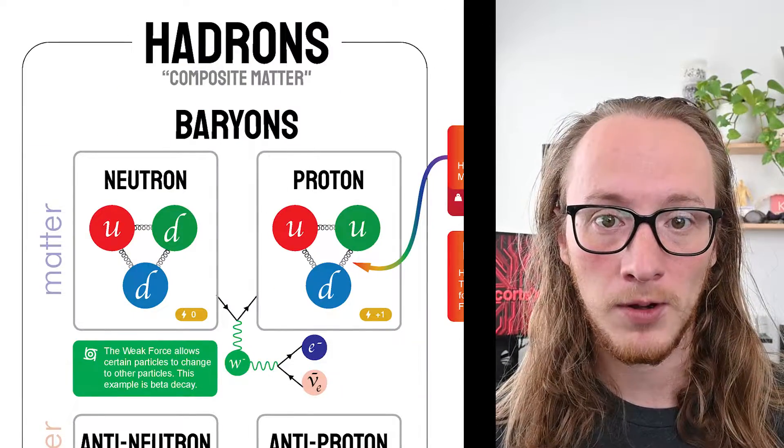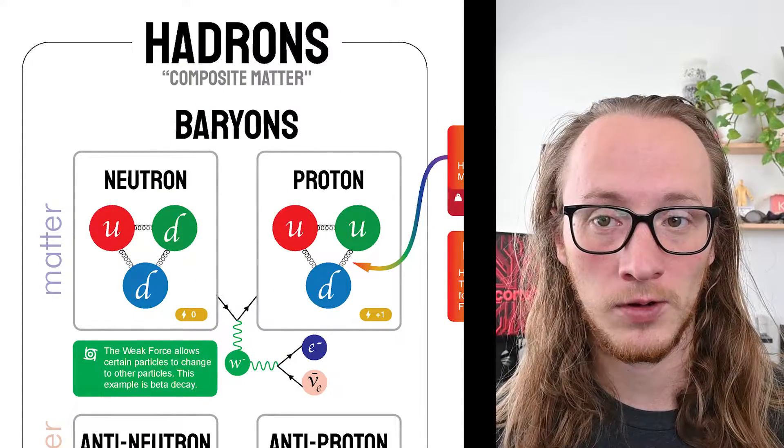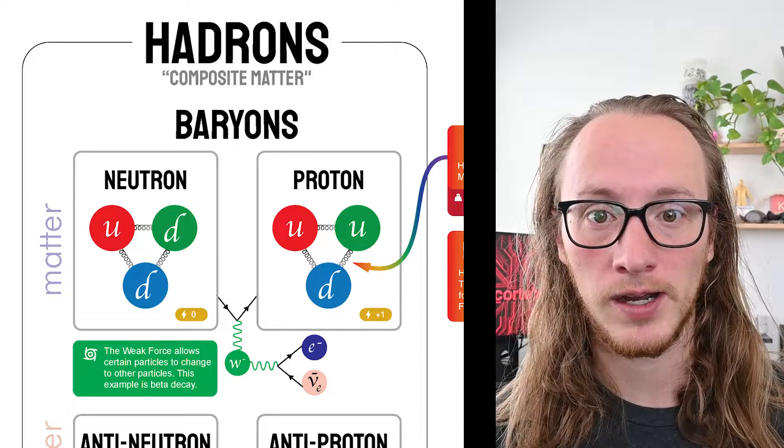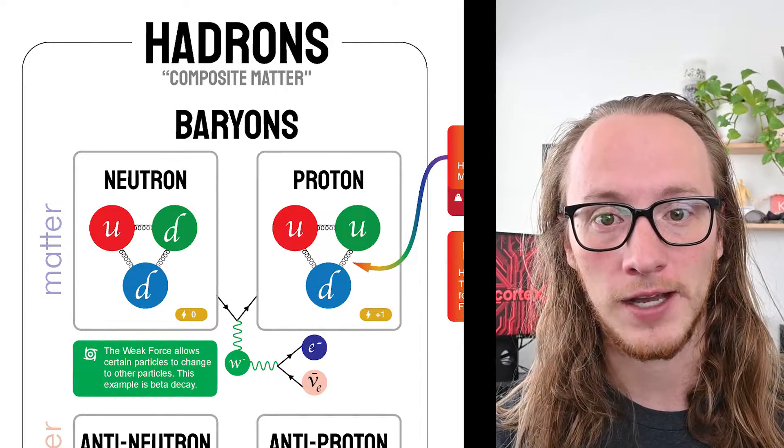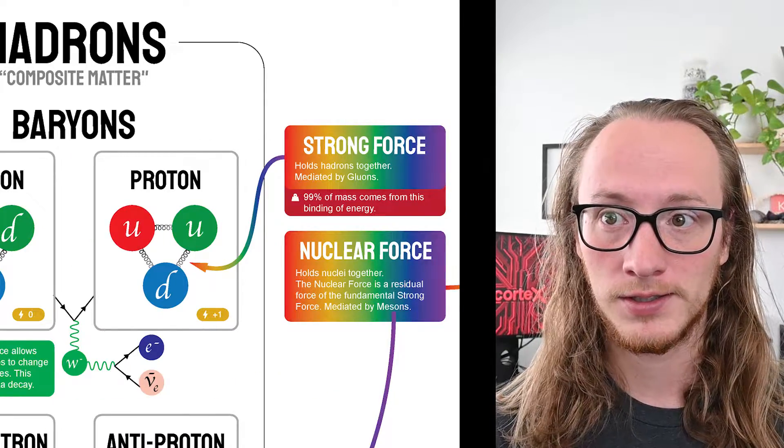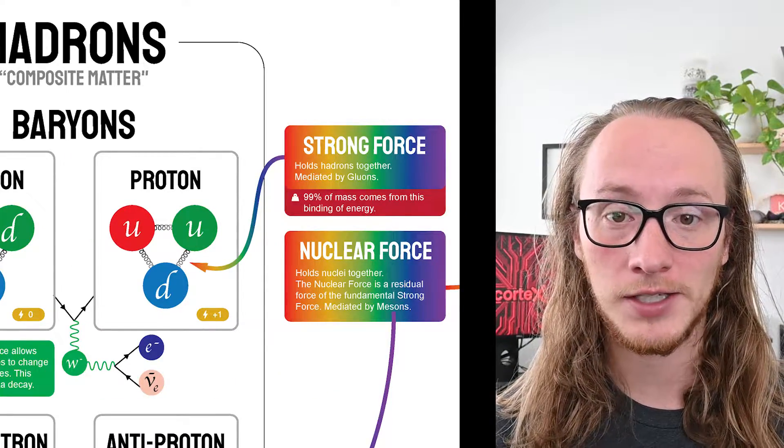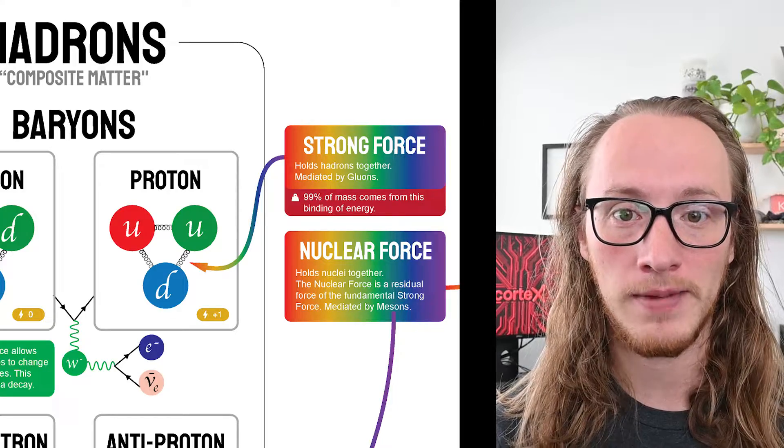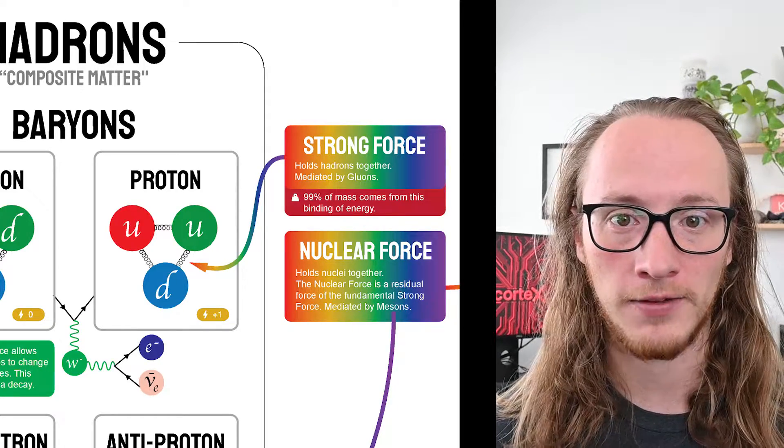A neutron is an up quark mixed with two down quarks. They're held together by gluons. There's a constant shifting of the colors of these and the gluons that are interacting with them. This binding force, the strong force, actually causes almost all of the mass that you and I have ever experienced.